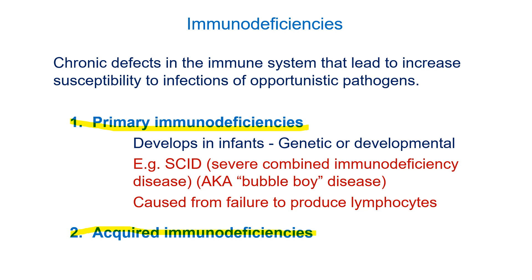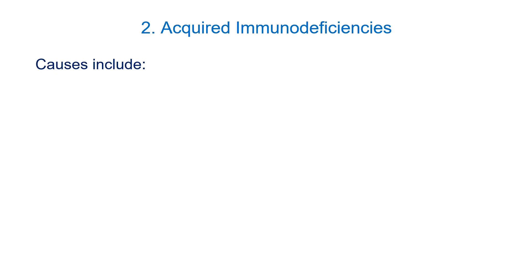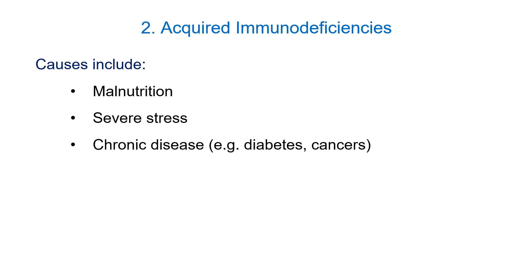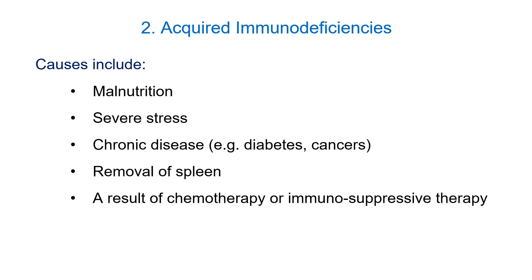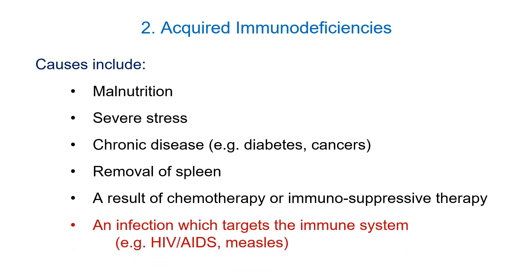The second type are acquired immunodeficiencies — things we develop after we're born. Causes include malnutrition, severe stress, chronic disease, diabetes, cancers, removal of the spleen, and immunosuppressive therapies such as after a lung transplant. One we will discuss is infections that lead to immunodeficiency — HIV and AIDS. Another one many people aren't familiar with is measles, which can knock out your immune system and kill many of your memory cells, making it a very serious disease. So let's talk about HIV and AIDS.